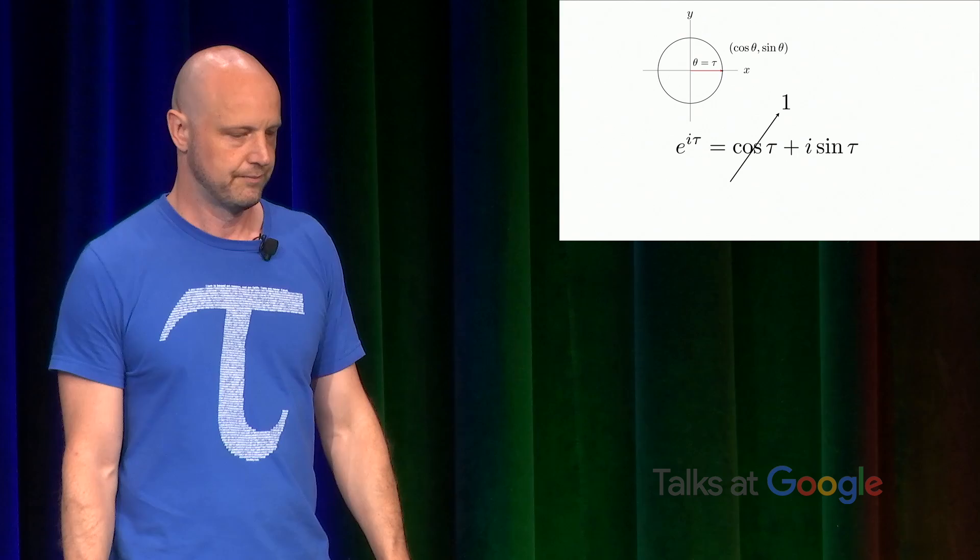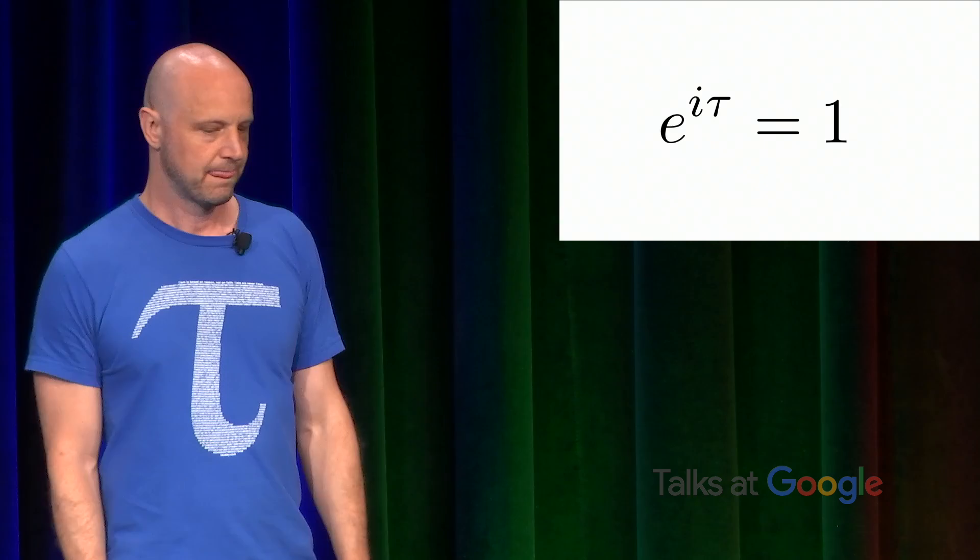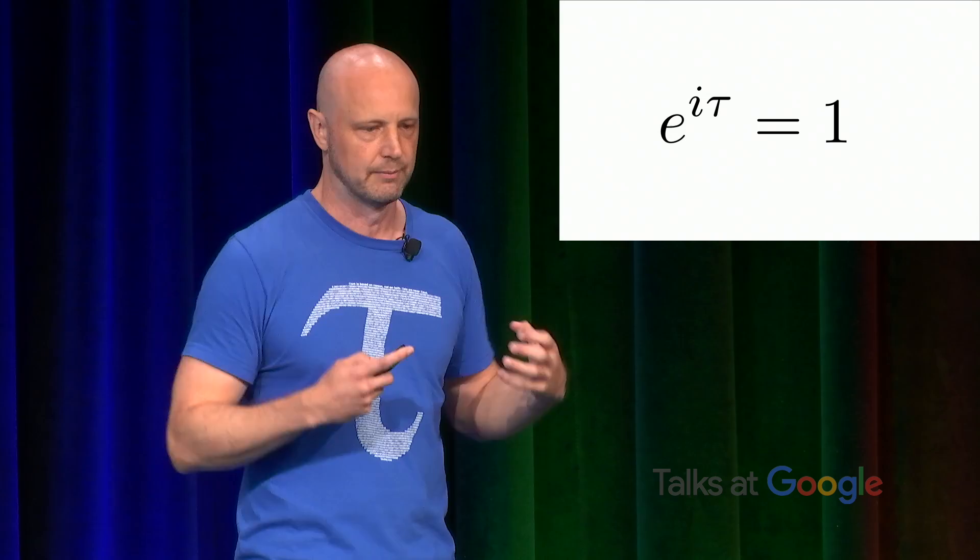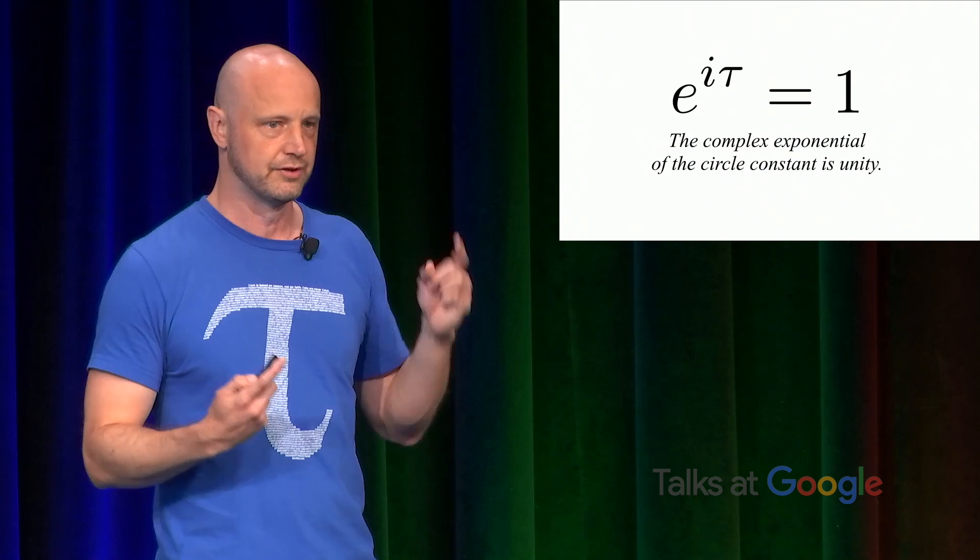And using the idea or the name that mathematicians use for one when they want to think of it, not just as a number, but as the abstract idea, we can say that the complex exponential of the circle constant is unity. So it's a fundamental relationship between these constants.